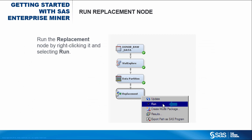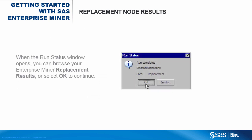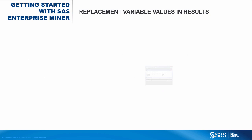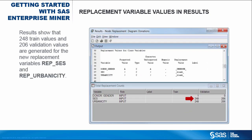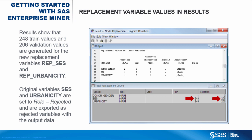Run the Replacement node by right-clicking it and selecting Run. When the Run Status window opens, you can browse your Enterprise Miner Replacement results or select OK to continue. Results show that 248 train values and 206 validation values are generated for the new replacement variables REPCESS and REPURBANICITY. Original variables CESS and Urbanicity are set to Role equals Rejected and are exported as rejected variables with the output data.